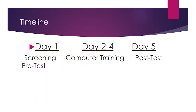This is the timeline of what their days looked like when they came in for the total of five days. For day one, they had an eligibility screening to make sure they were able to participate and that we could use their information in the study. They also did a pretest on the first day. For the pretest, they had headphones and they also used an eye patch so that we could measure each eye individually.